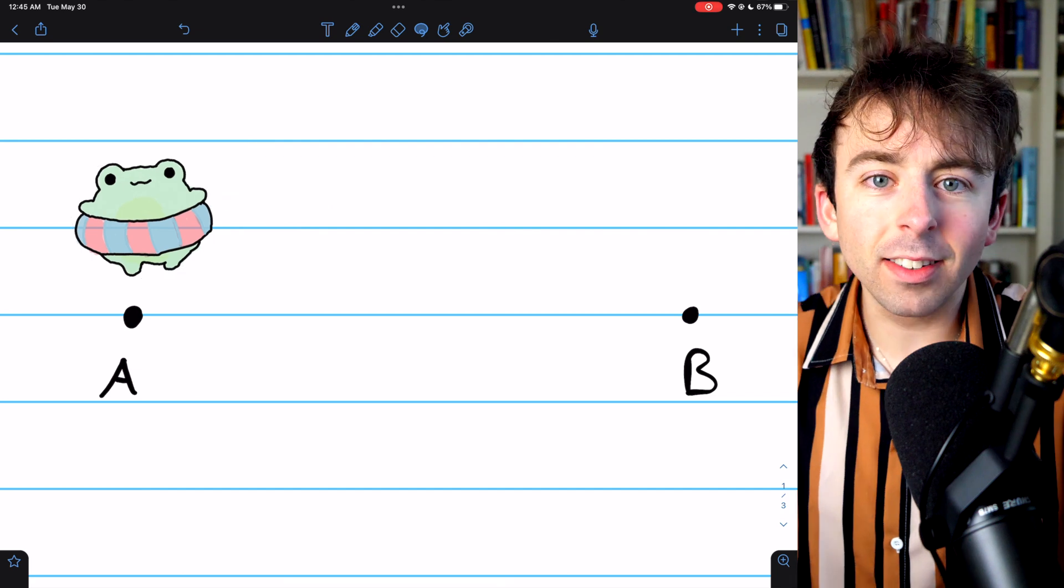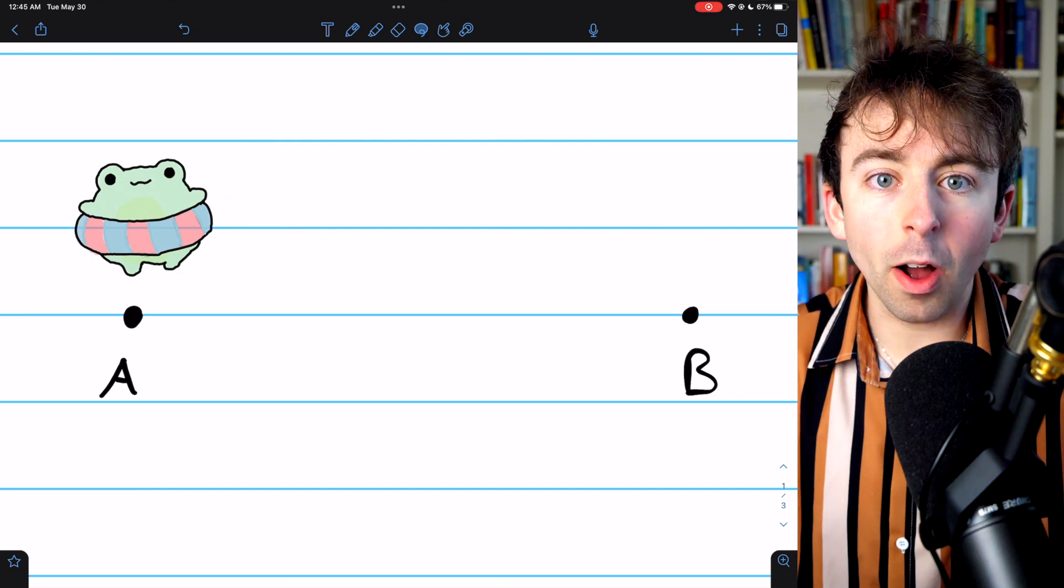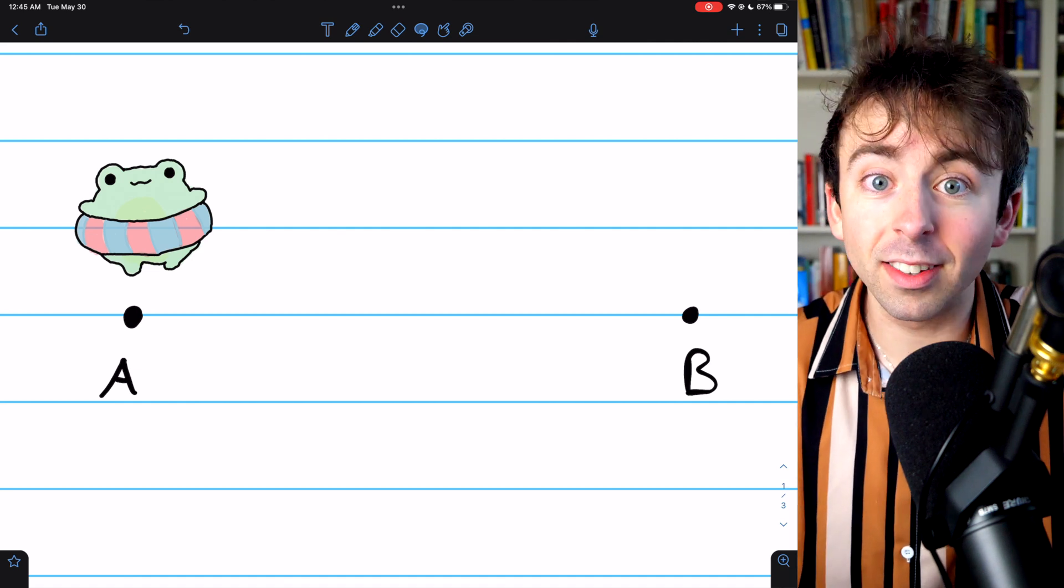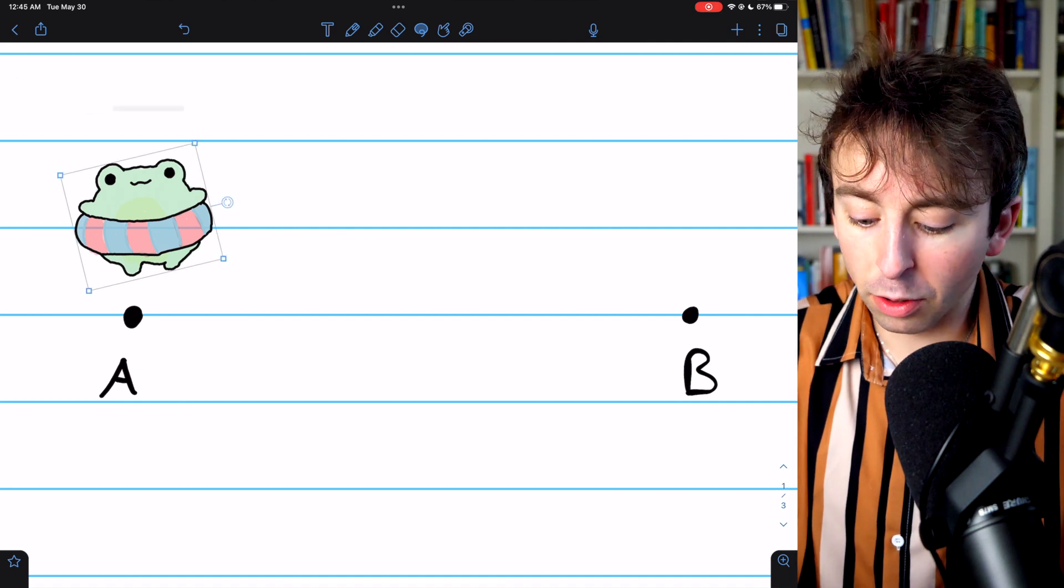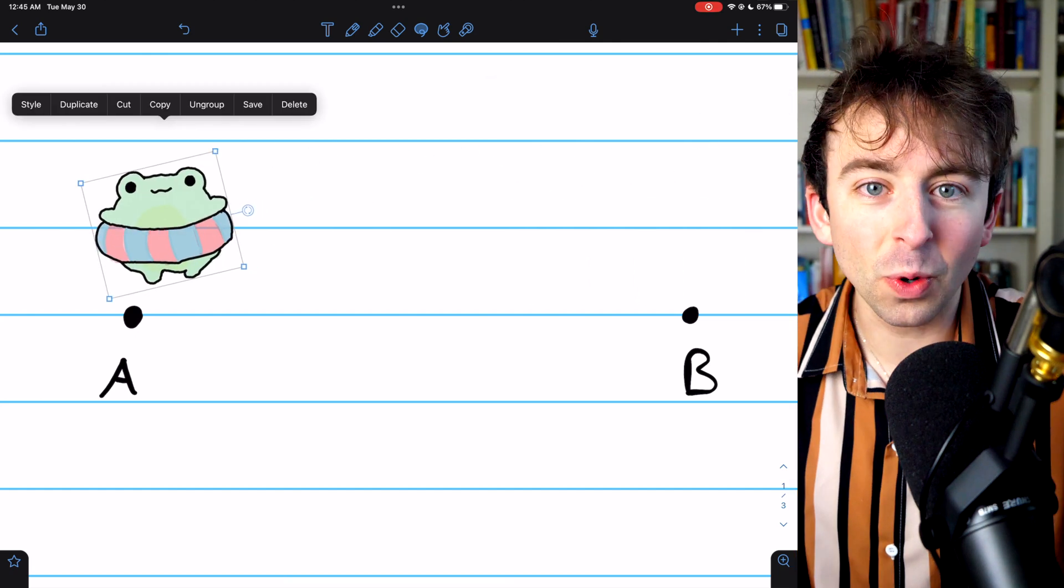That's because the position function of the frog is continuous. The frog can't just teleport and skip points. If the frog goes from here to here, then at some point, the frog was at all the places in between.